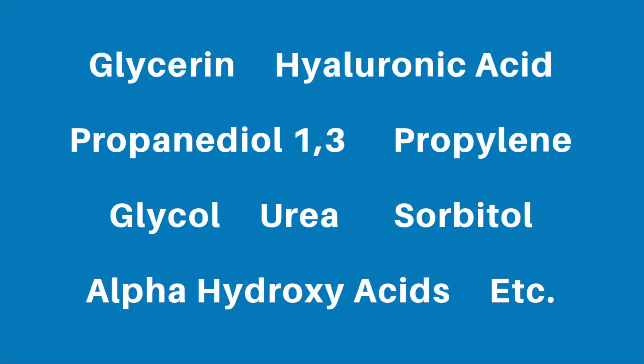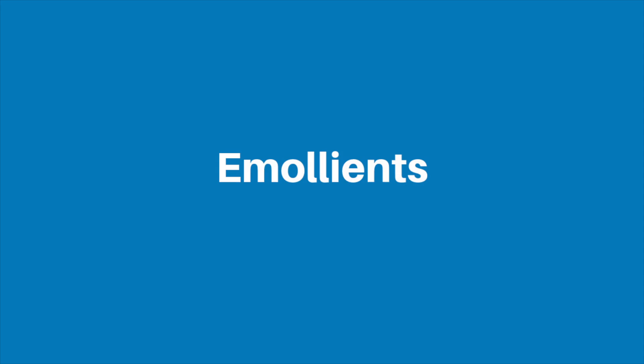Here are some examples of humectants: glycerin, hyaluronic acid, propanediol-1,3, propylene glycol, urea, sorbitol, alpha hydroxy acids — and that's just to name a few.